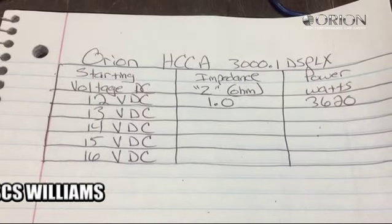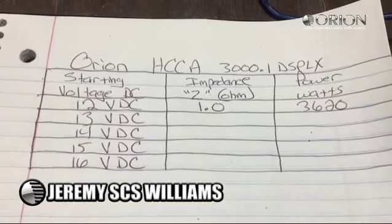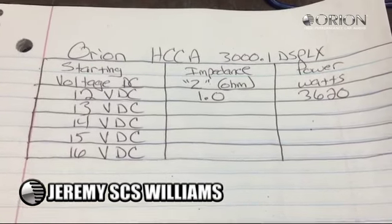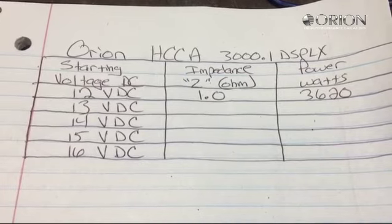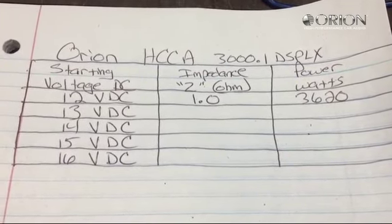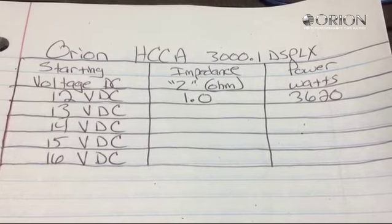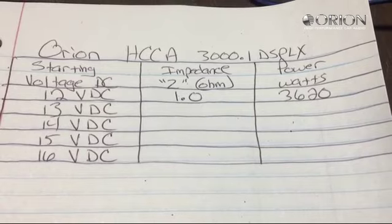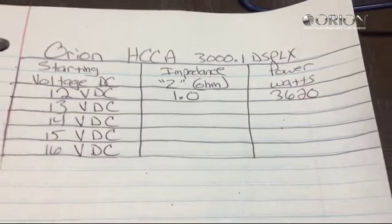All right, test number two for the Orion HCCA 3000.1D SBLX. You can see it on our first test at 12 volts starting. The final impedance after rise was 1.0 ohm and the power that we got on the Termlab was 3,620 watts.